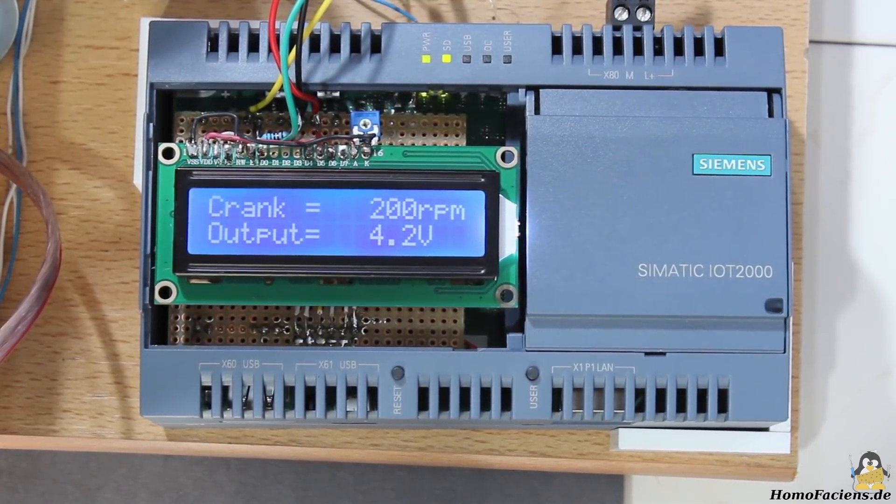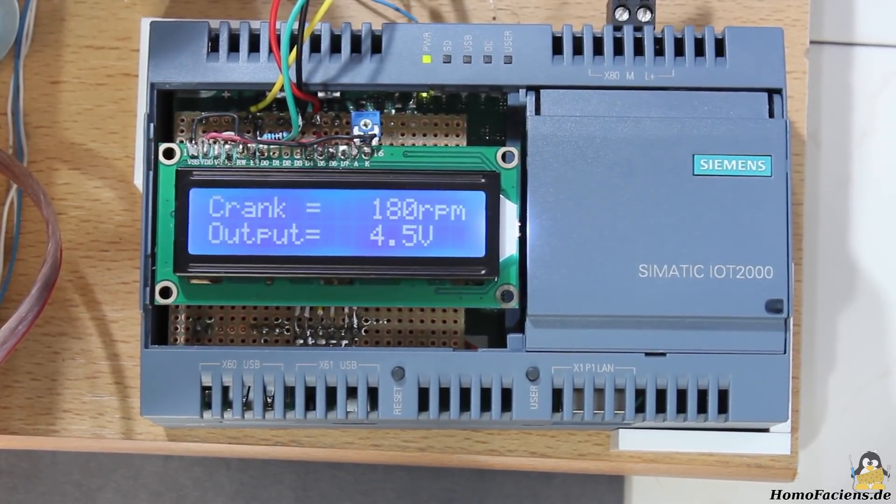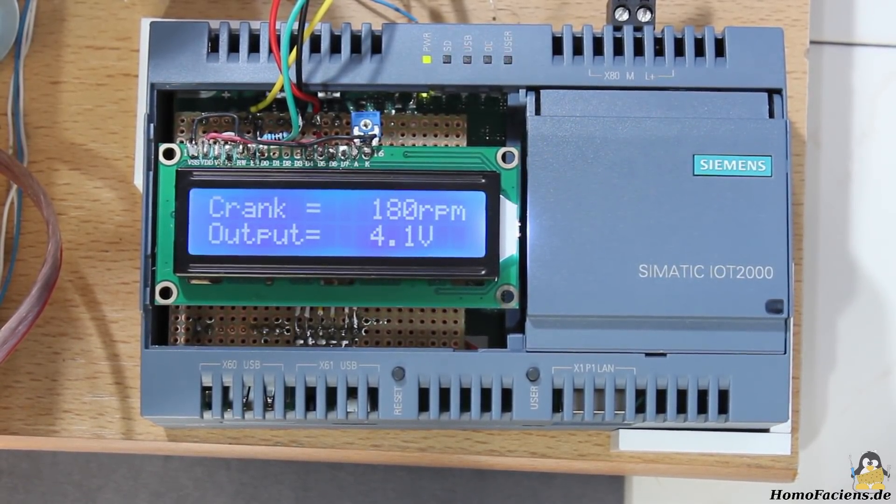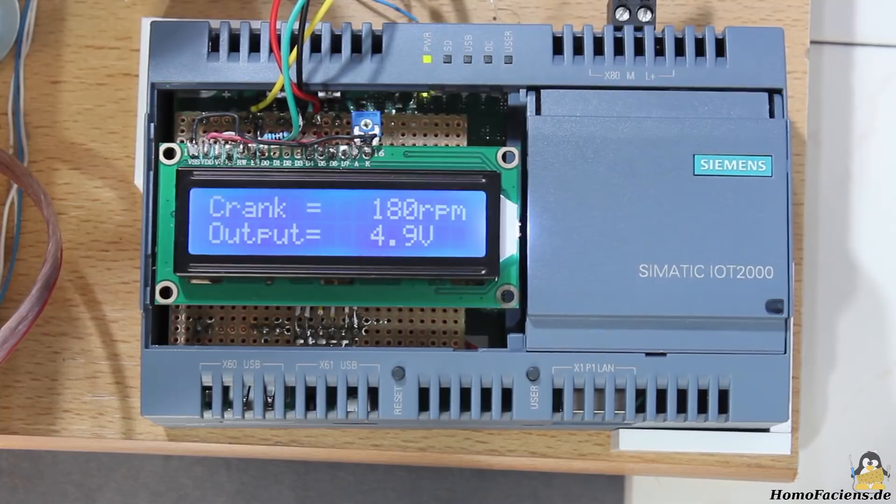180 revolutions per minute on the crank correlate to 9000 revolutions per minute on the electric generator needed to keep the Simatic running. The output voltage at the terminals of the generator is between 4 and 5V.